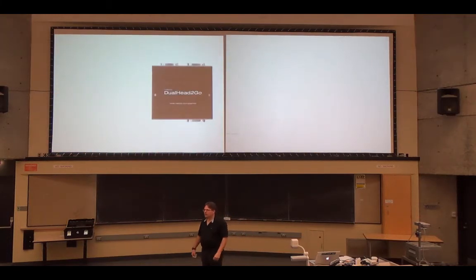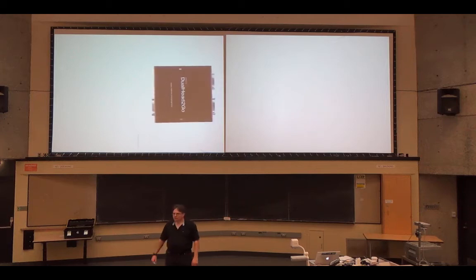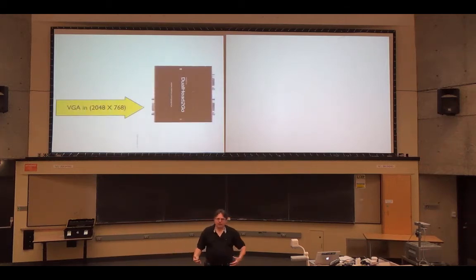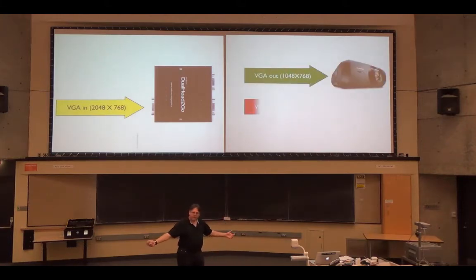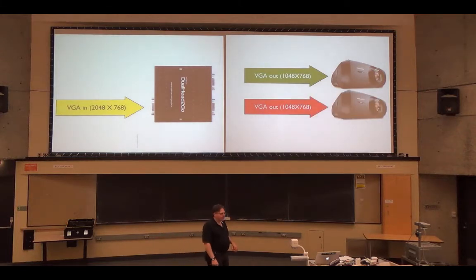So there's our Matrox black box again. Turn it on its side. I said the signal coming in is 2048x768. And we have two outputs. One for the left screen and one for the right screen. Both of VGA quality.